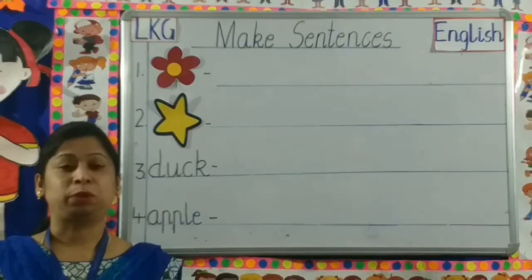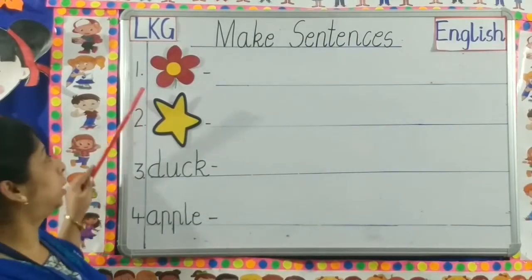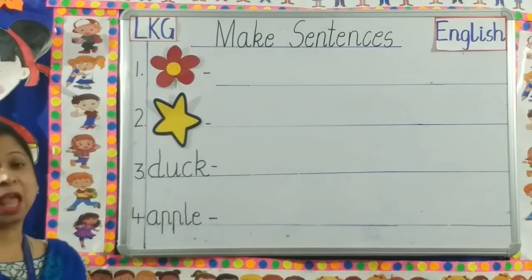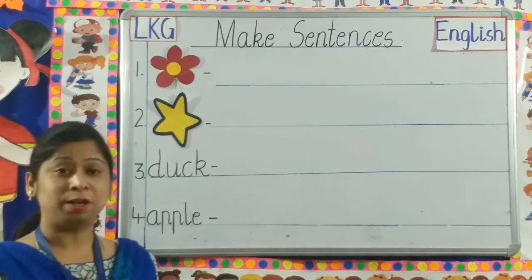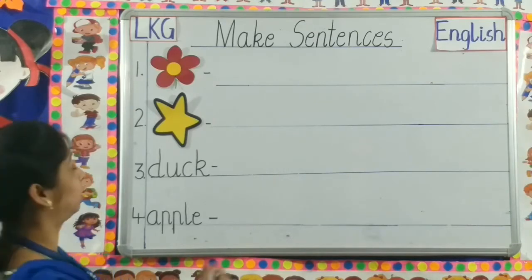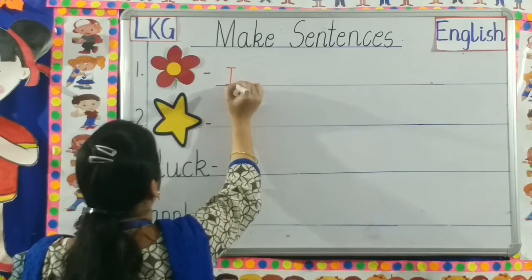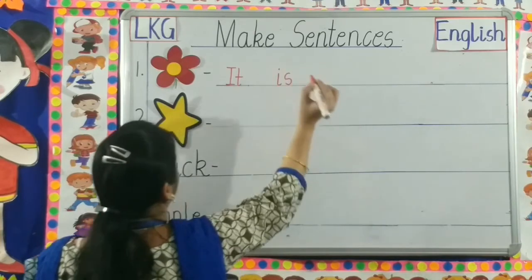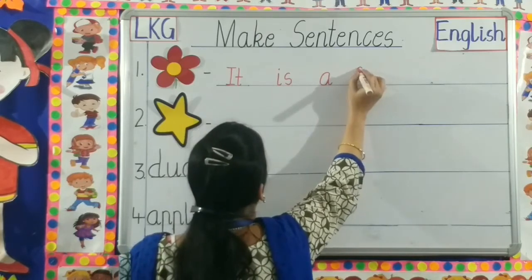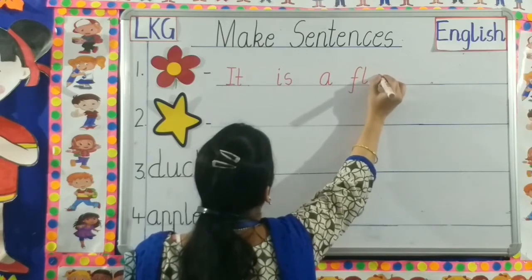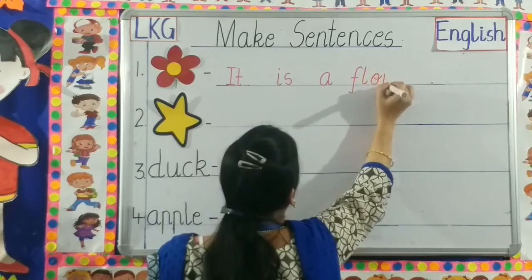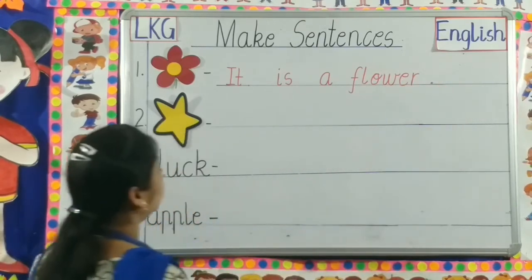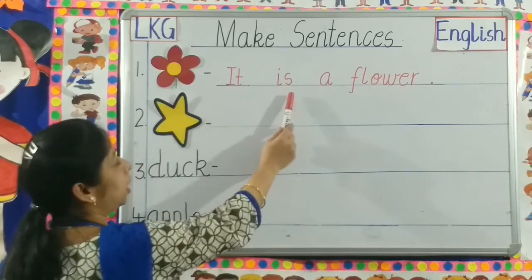Now children, I am going to teach you how to make sentences with the pictures and words. The first picture is flower. Can you make a sentence with the picture flower? Yes, let us write the sentence. I-T, It. I-S, Is. A. F-L-O-W-E-R, Flower. Full stop. It is a flower.